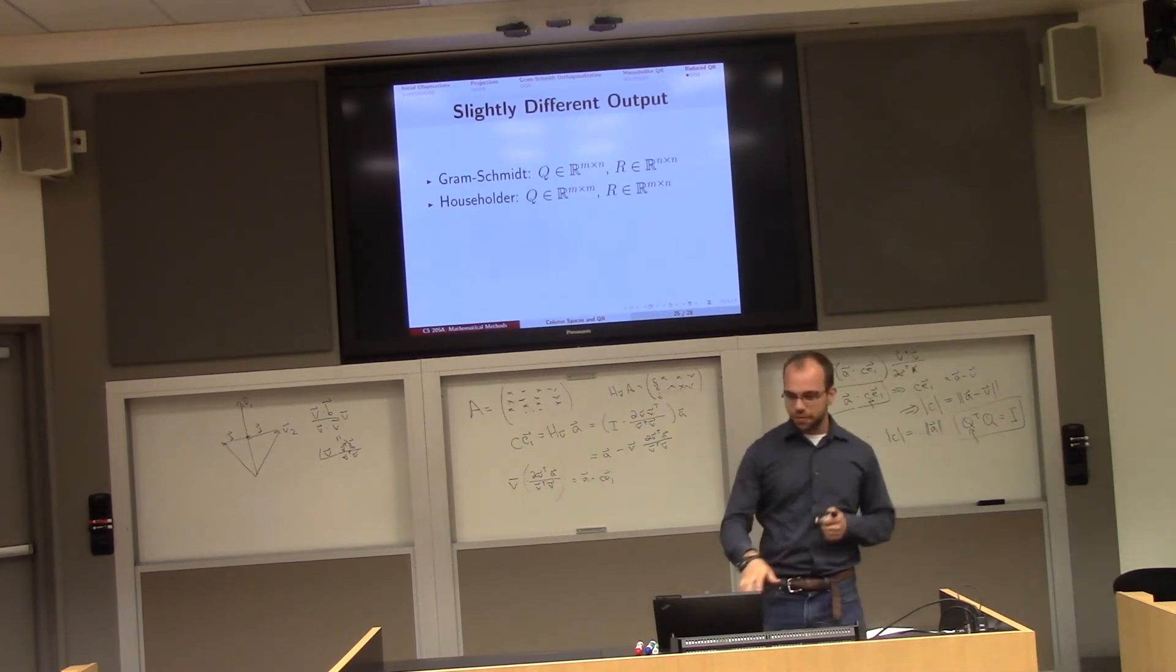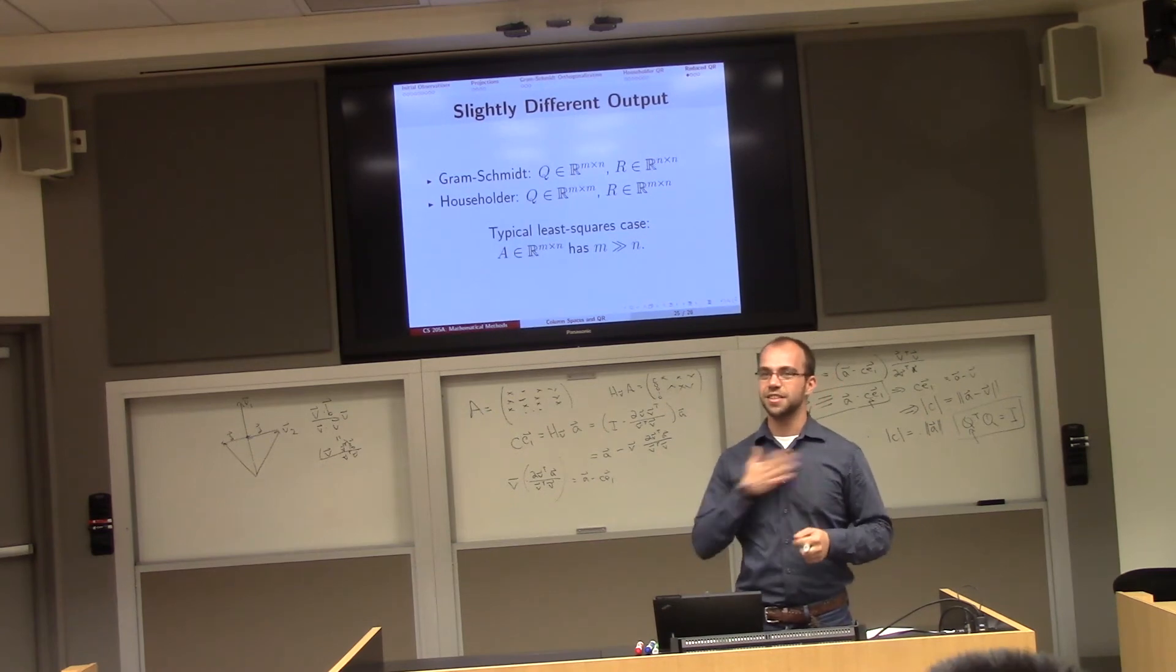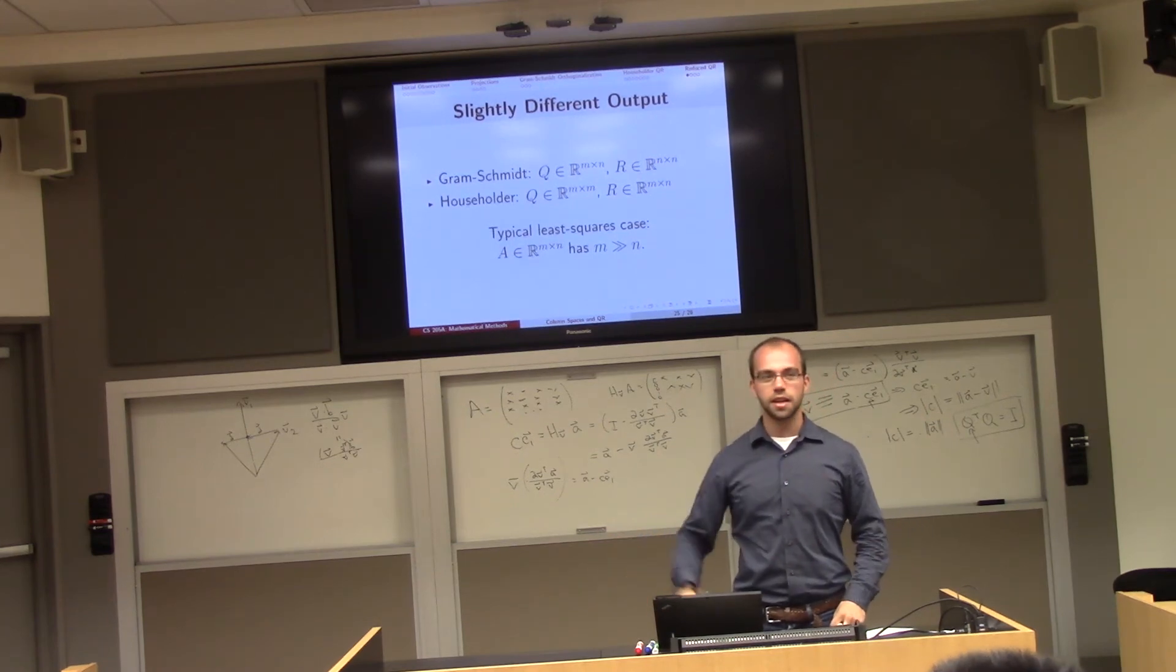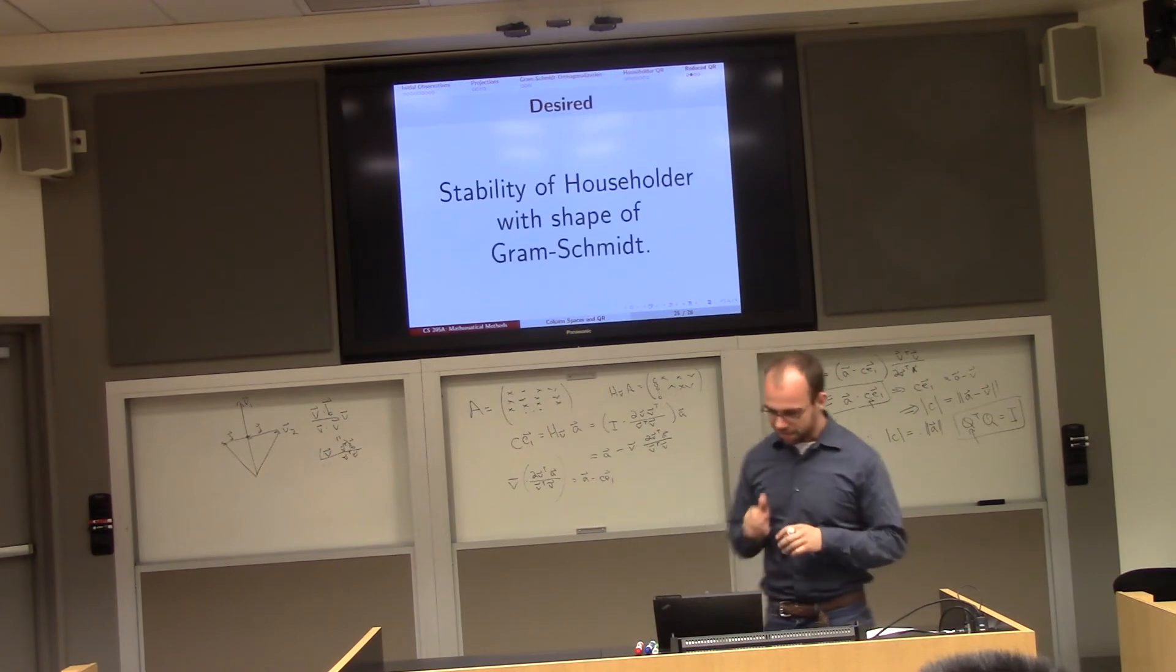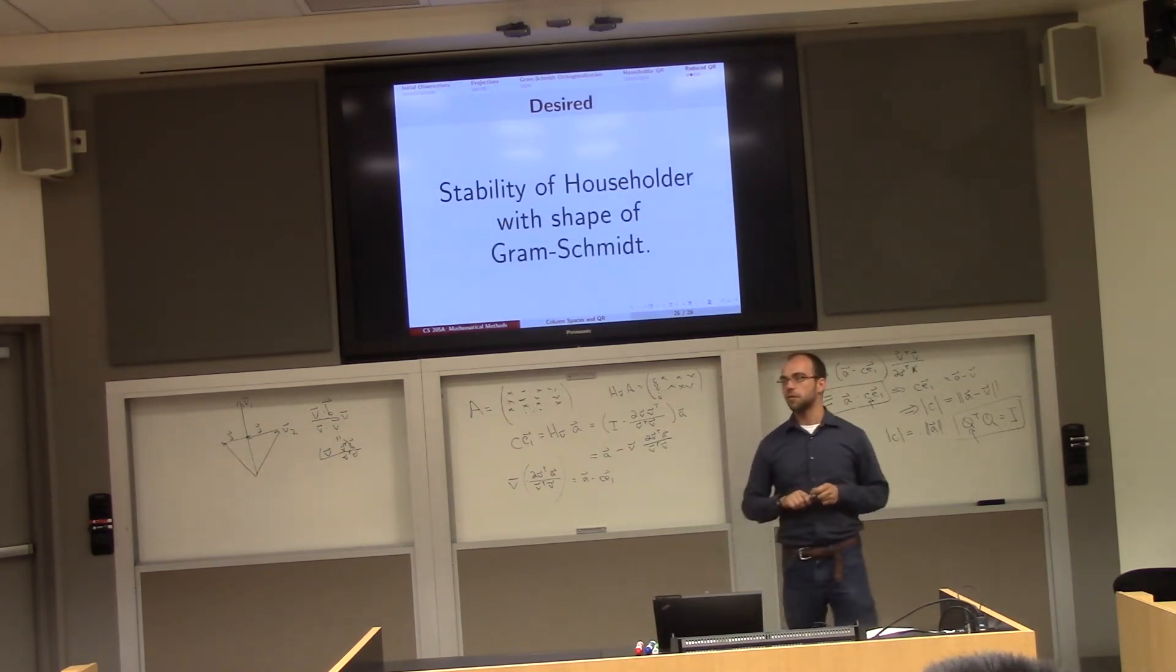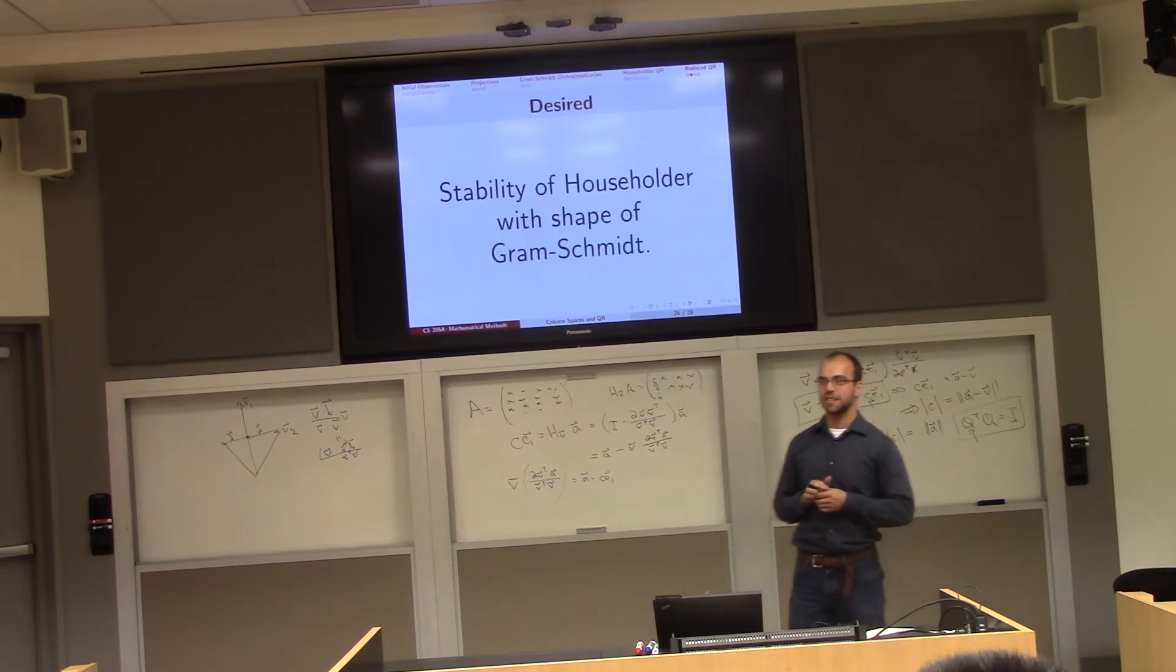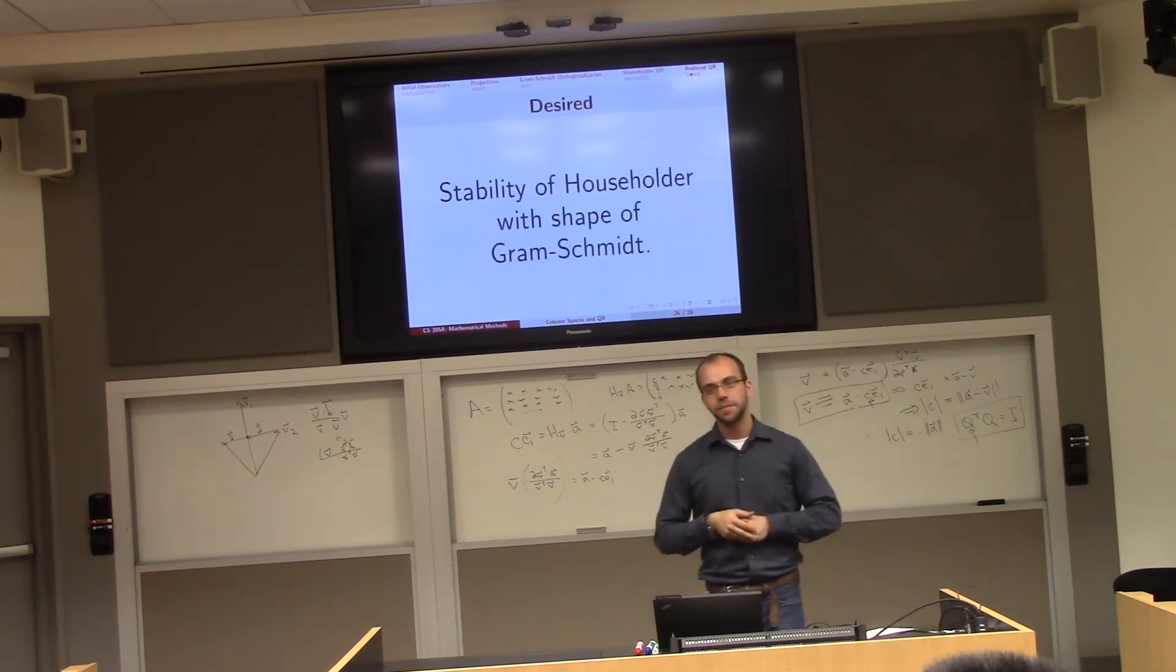That's not such a good thing. And so, in fact, this is a very common case and something that we need to worry about a lot. So how are we going to do this? Well, what we really want is the stability of this Householder method. You'll notice the Householder method really doesn't end up dividing by zero quite as much as Gram-Schmidt does. But we want the shape of Gram-Schmidt, right? Gram-Schmidt had this nice compact form for that least squares problem.